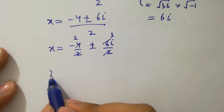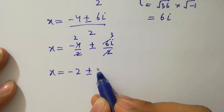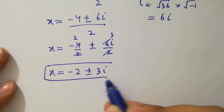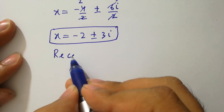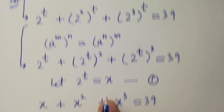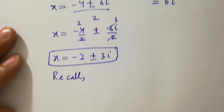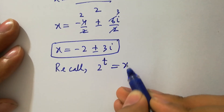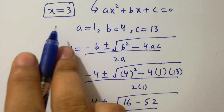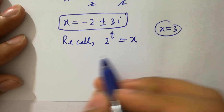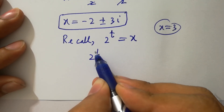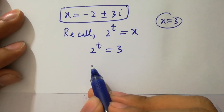So x equals minus 4 plus or minus 6i, over 2, giving x equals minus 2 plus or minus 3i — a complex solution. Recalling that 2 to the power t equals x, and taking the real solution, we have x equals 3, so 2 to the power t equals 3.